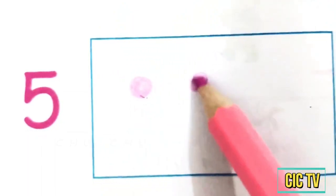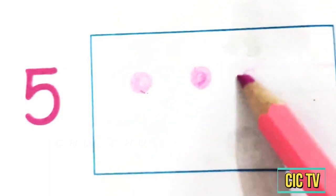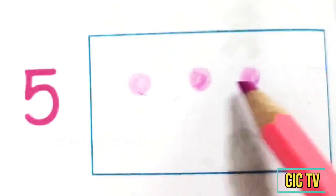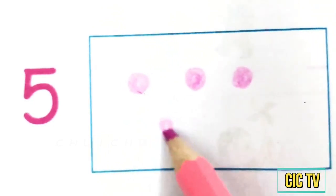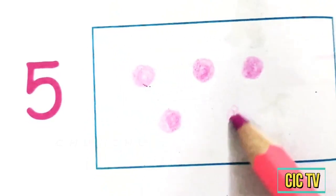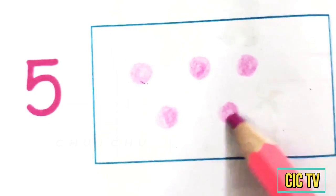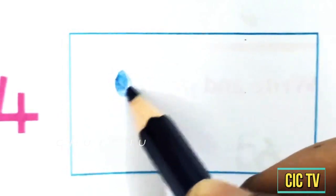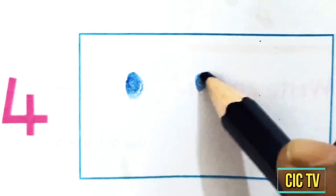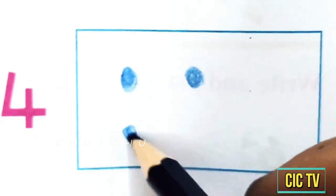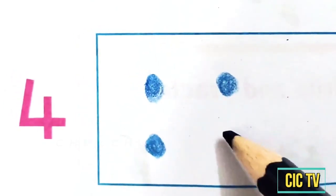Next: 5. We are going to draw 5 dots. 1, 2, 3, 4, and 5. 5 dots. Last one is 4. We are going to draw 4 dots. 1, 2, 3, and 4.